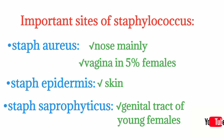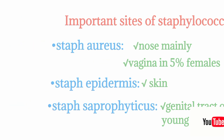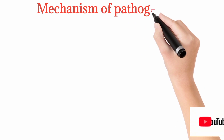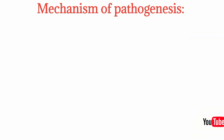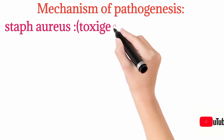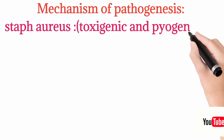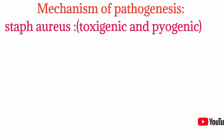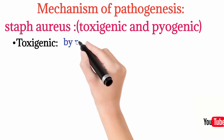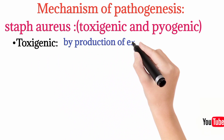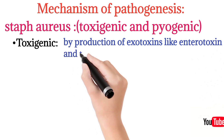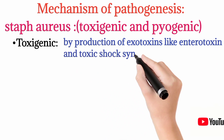These sites are very important regarding pathogenesis of each organism. Staph aureus has two mechanisms of pathogenesis: toxigenic and pyogenic. Toxigenic means Staph aureus can produce exotoxins. The exotoxins produced include enterotoxin and toxic shock syndrome toxin (TSST).